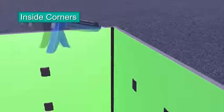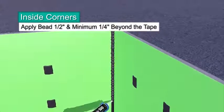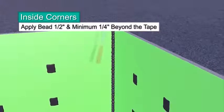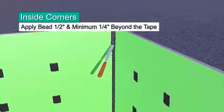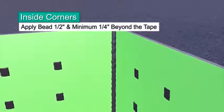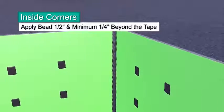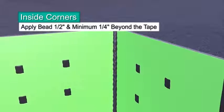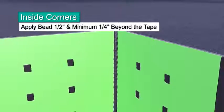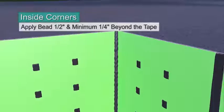Apply a bead of Dimonic 100 sealant directly on top of the bond breaker tape. Tool the sealant smooth and extend at least 1/4 inch beyond the edges of the bond breaker tape. The tape breaks the bond of the sealant to avoid three-sided adhesion to accommodate for building movement.